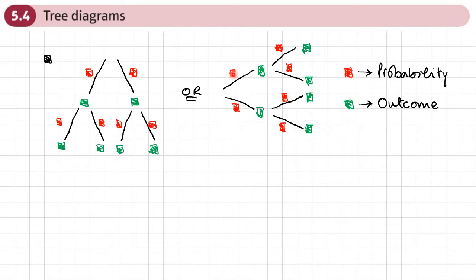Where I've put the red boxes, this is where you would write your probabilities, either fractions or decimals. And where I put the green boxes is where you would put your outcome. So I don't know heads or tails, that type of thing.